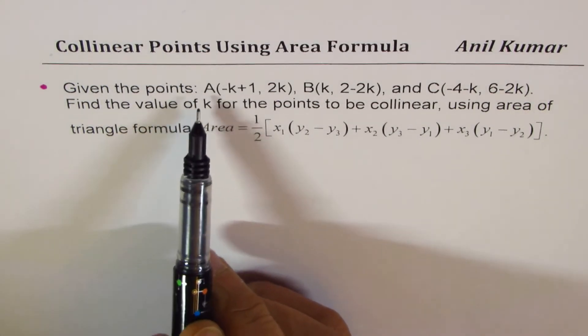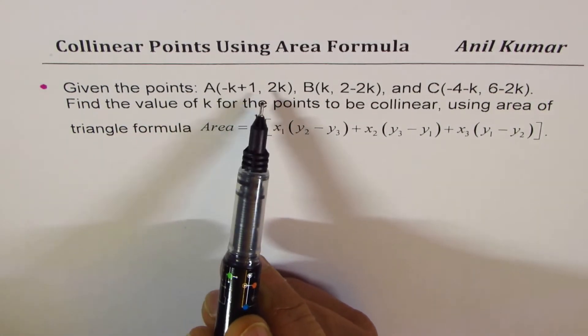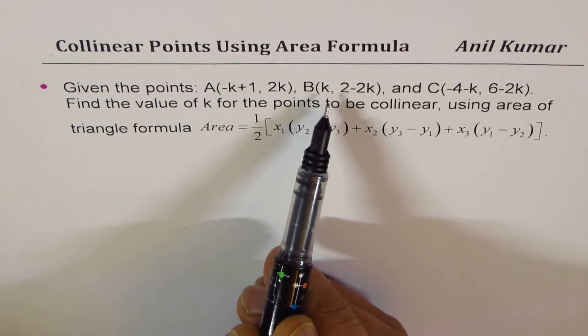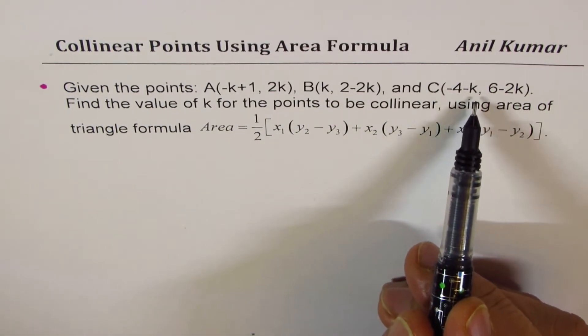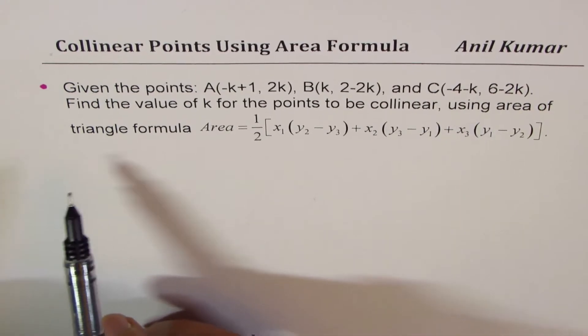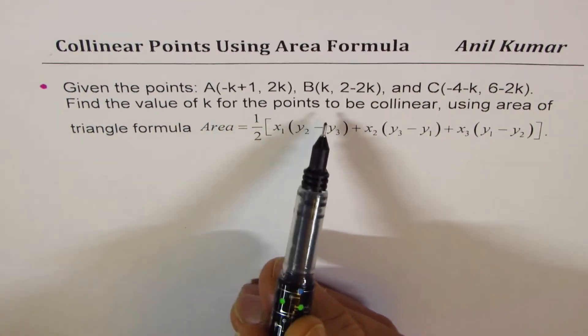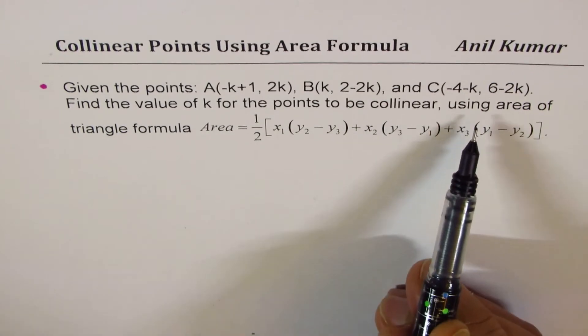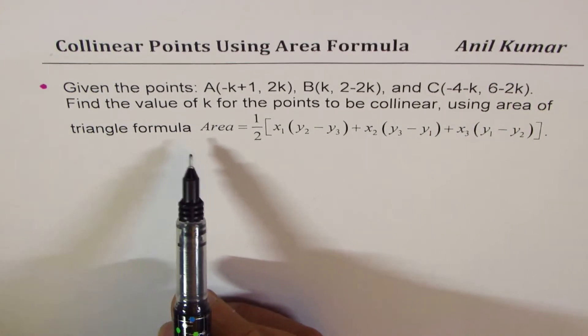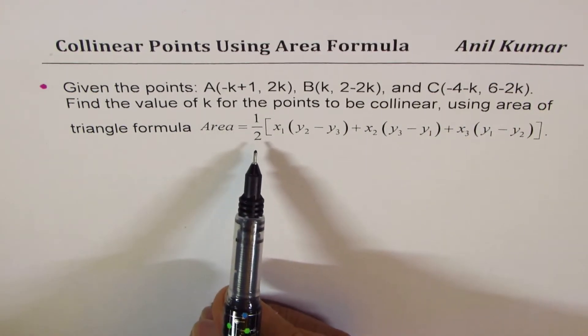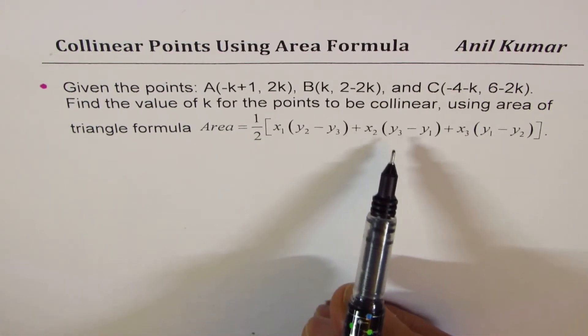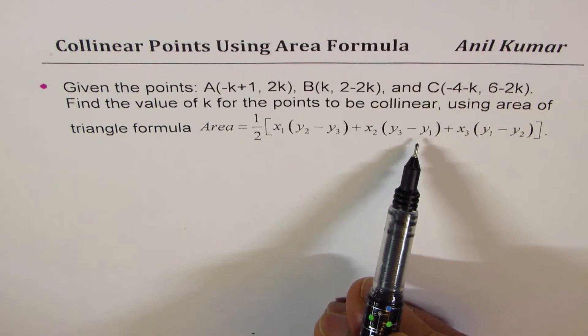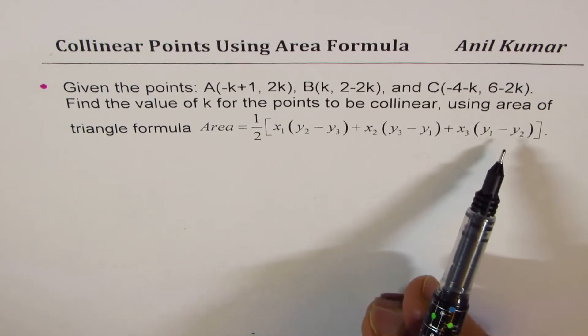The question here is, given the points A(-k+1, 2k), B(k, 2-2k), and C(-4-k, 6-2k), find the value of k for the points to be collinear using area of triangle formula. Area equals to half x1 times (y2 - y3) plus x2 times (y3 - y1) plus x3 times (y1 - y2).